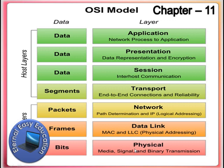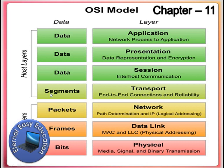First, the physical link is made through the media — signal and binary transmission — where data is in the form of bits. It is then given to the Data Link layer, which handles MAC and LLC physical addressing of the host where data should be sent. The data then moves from bits to frames, and then to packets in the Network layer, where IP path determination and logical IP addressing takes place — the Internet Protocol takes care of this layer.